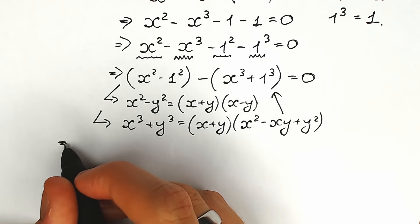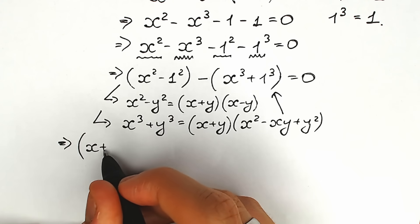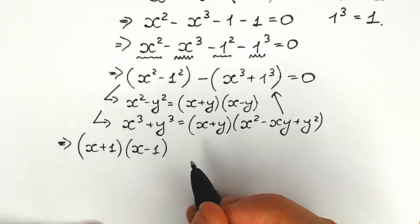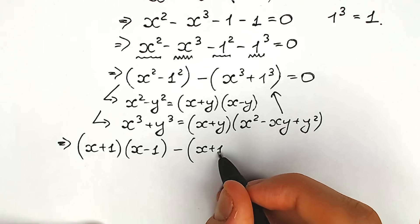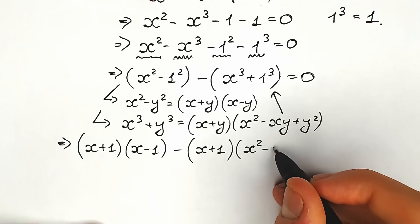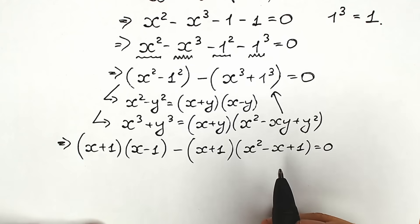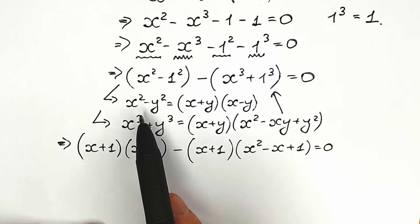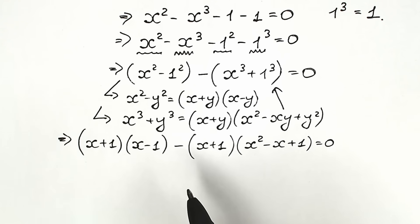As a result, we have: the first parenthesis (x plus 1)(x minus 1), and then minus (x plus 1)(x squared minus x plus 1) equal to 0. We factored both parts — the difference of squares factored here, and the sum of two cubes factored here. We can see that (x plus 1) appears in both terms, so we can factor it out.